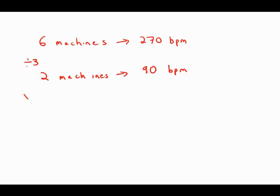Now I'm going to multiply by five to get ten machines. Ninety times five is 450. So ten machines would make 450 bottles per minute.